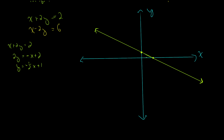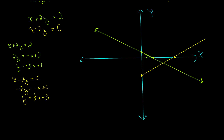Now the yellow equation, x minus 2y equals 6 — I'll solve for y the same way. Subtract x from both sides, then divide by negative 2, so negative over negative is positive. The y-intercept is negative 3, and the slope is positive one-half — rise 1, over 2. I'll draw the line and look for where it intersects the green line. The intersection point is the solution.